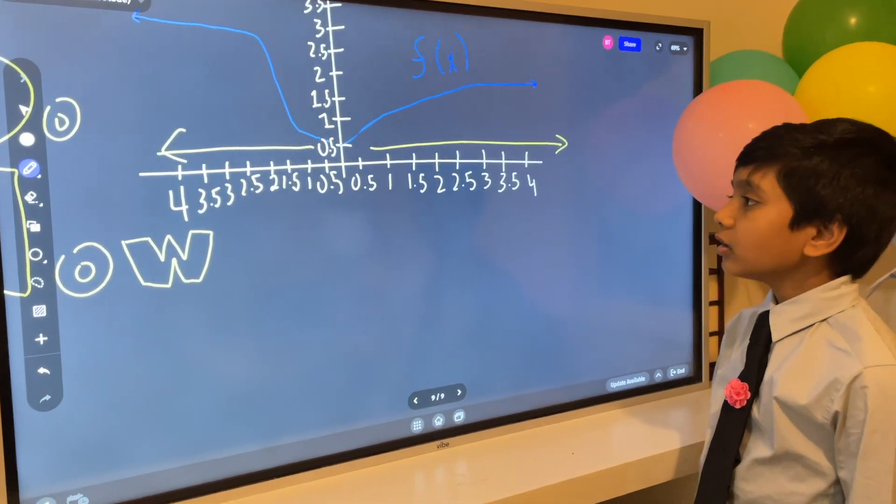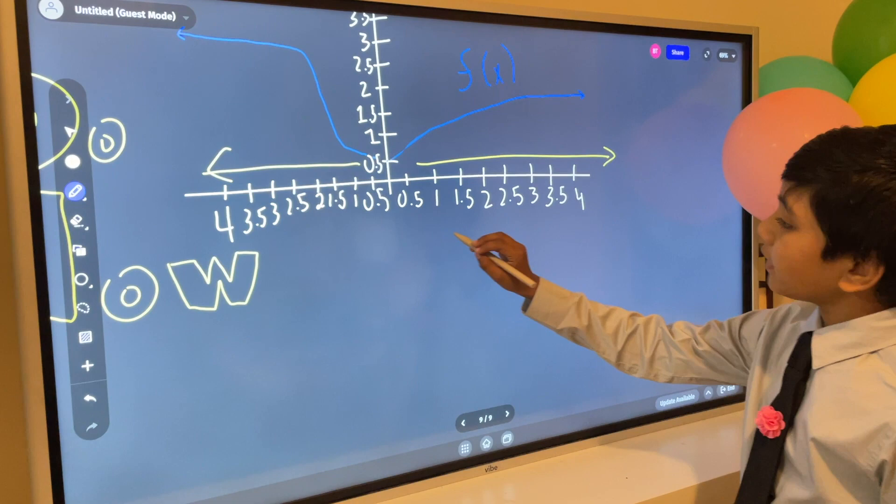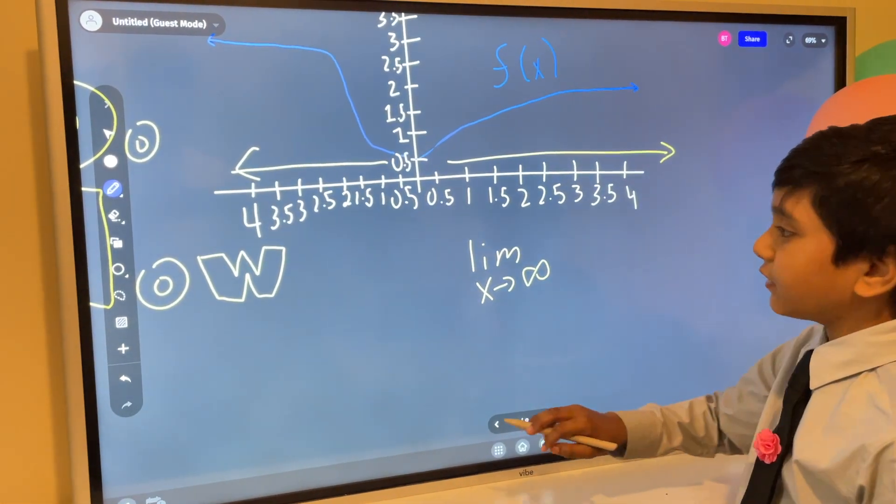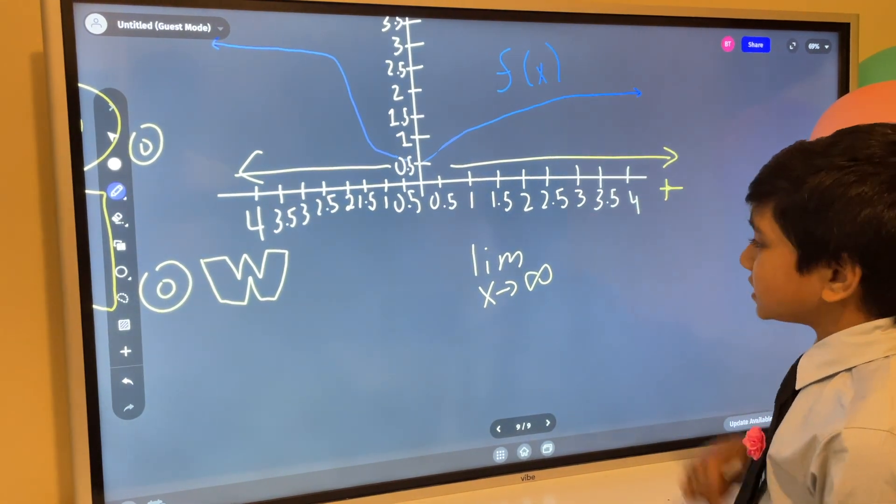But how can we express that? Well, we can express going to the left by x approaching positive infinity, since we're going in the positive direction.